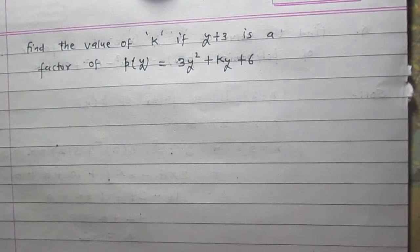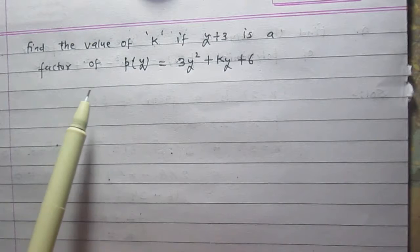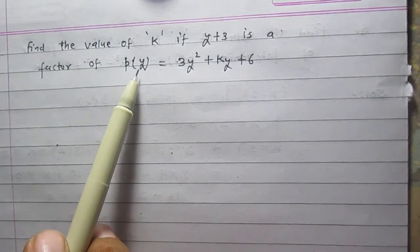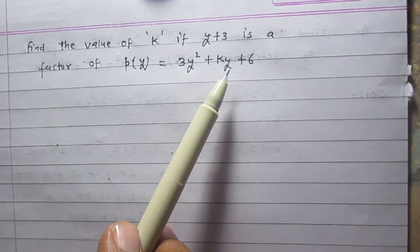Find the value of k if y plus 3 is a factor of the polynomial in y which is 3y squared plus ky plus 6.